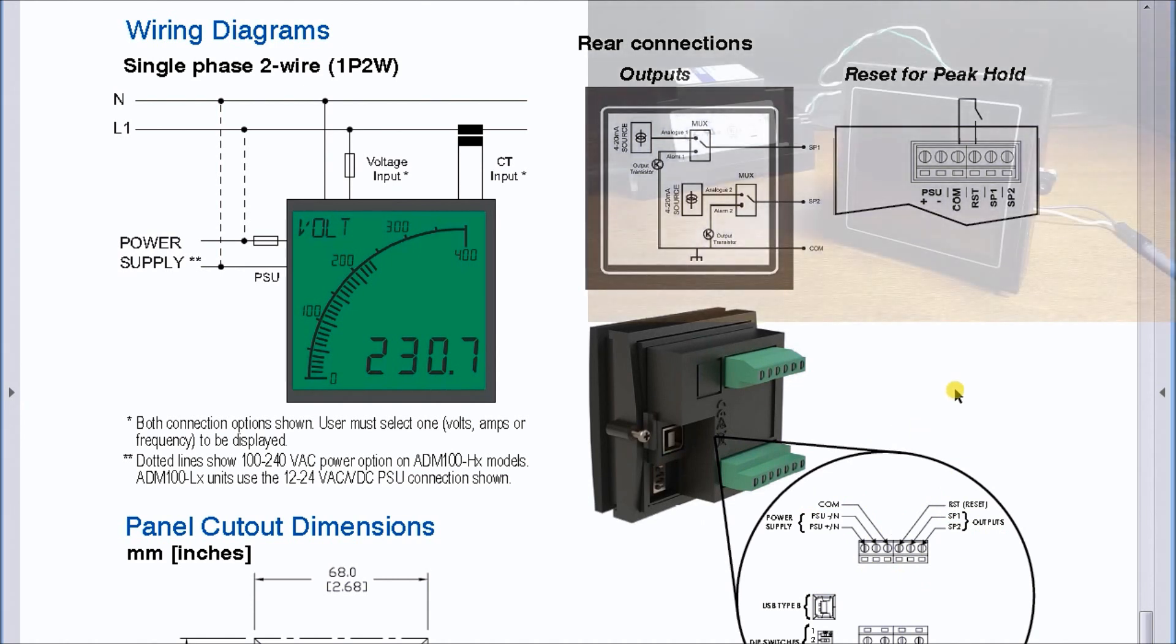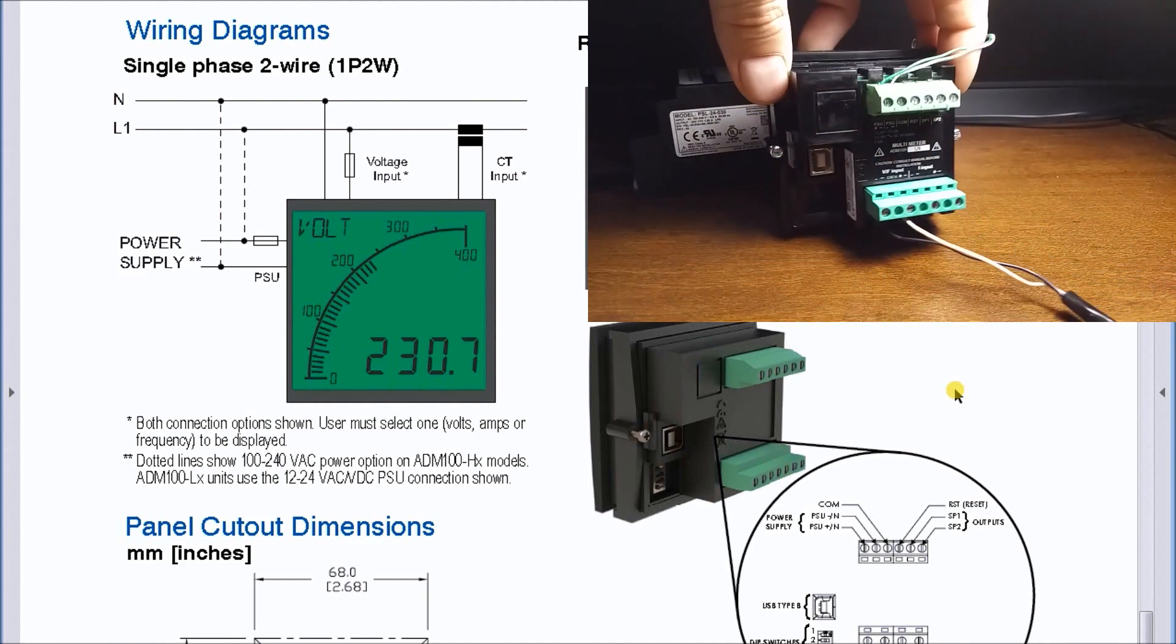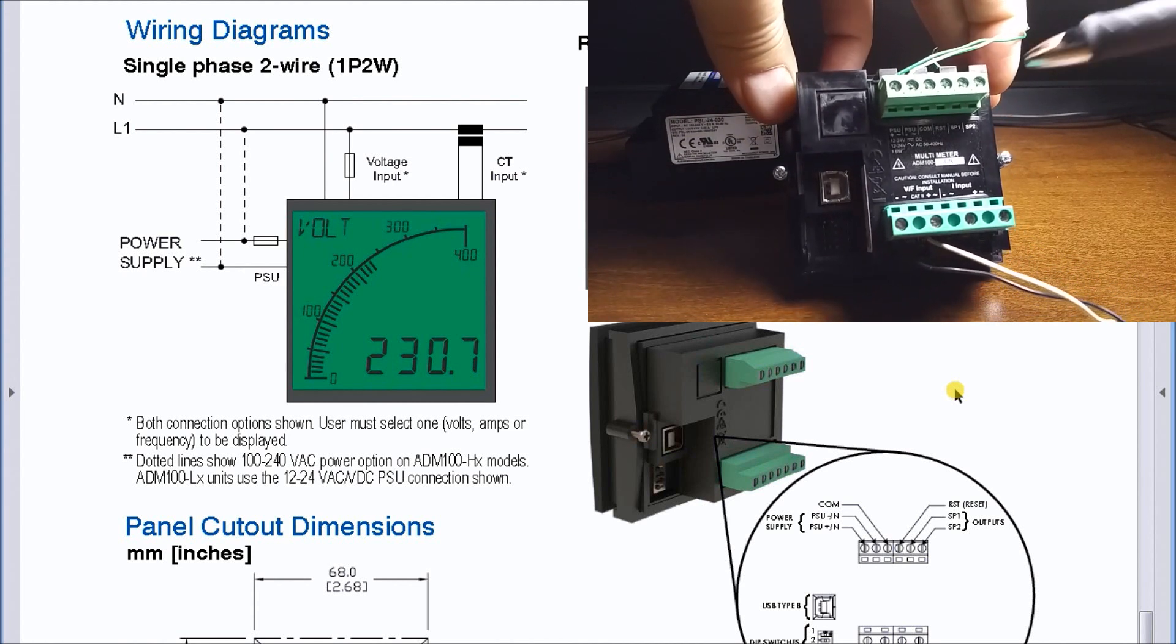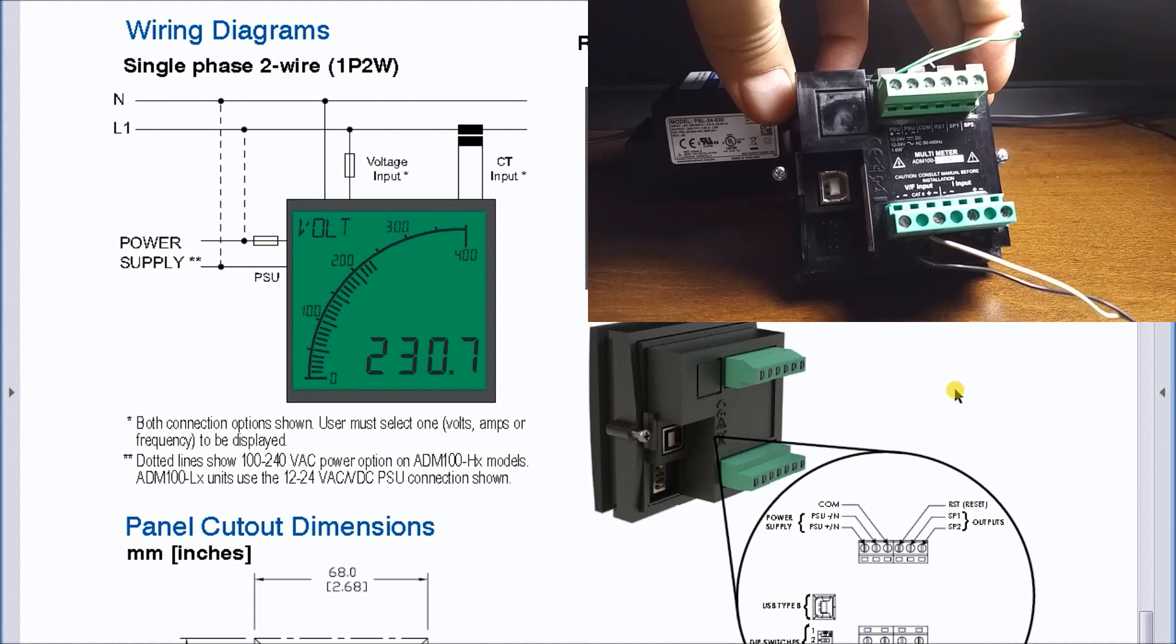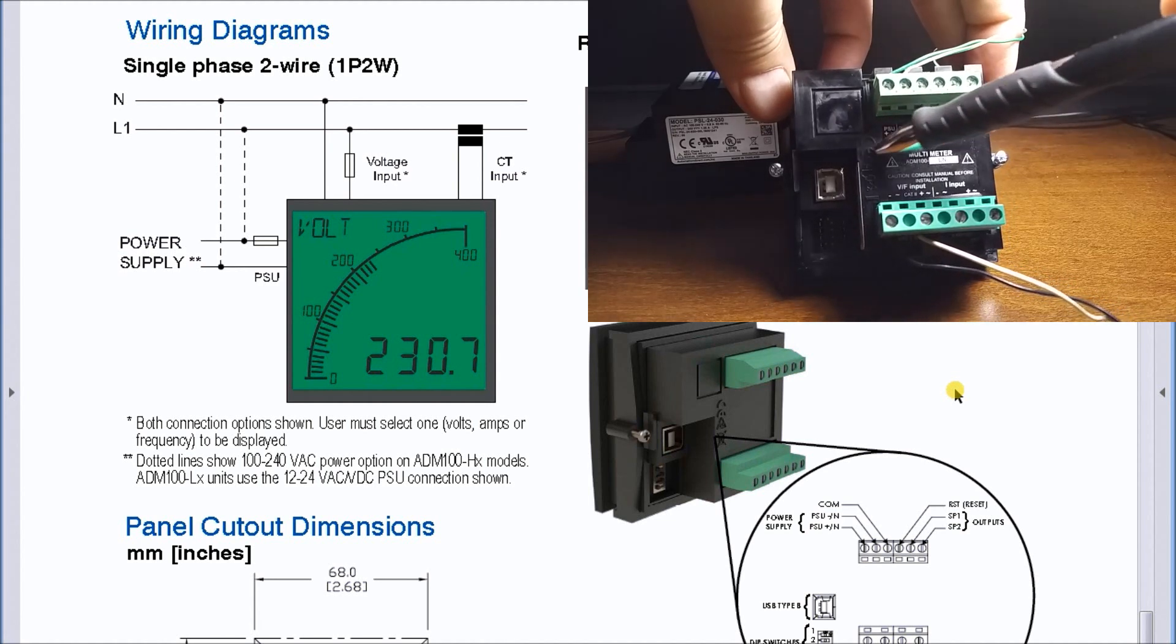Let's go to my actual unit itself. If I turn this around, what we'll see is my actual model number is an ADM 100 LN, which means that it is the low voltage, so it's DC 24.